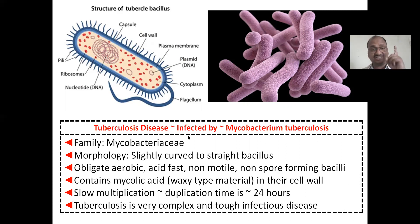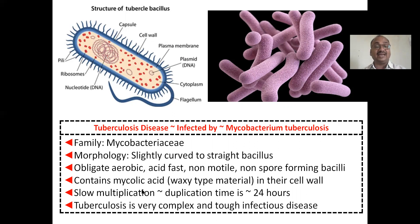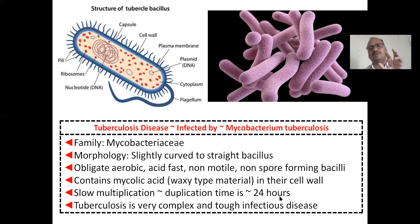Tuberculosis is an infectious disease caused by Mycobacterium tuberculosis, family Mycobacteriaceae. Morphology: slightly curved or almost straight bacillus. It is an obligatory aerobic bacterium — mainly respiratory, because it is aerobic. It is acid-fast, non-motile, non-spore-forming. The cell wall contains mycolic acid — a waxy-type material, like candle wax. Multiplication is very slow: one organism divides into two in 24 hours. Very complex and tough.